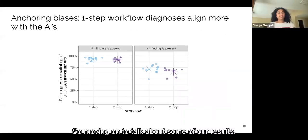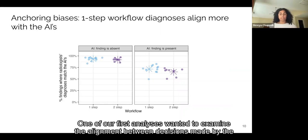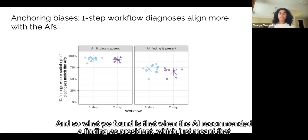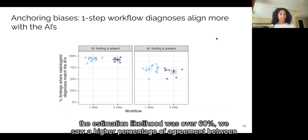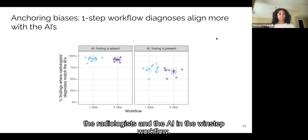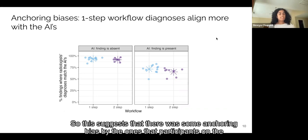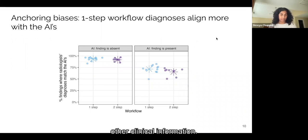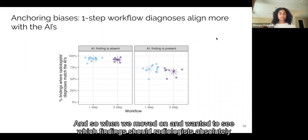Yeah, so moving on to talk about some of our results. One of our first analyses wanted to examine the alignment between decisions made by the radiologist and decisions offered by the AI. And so what we found is that when the AI recommended a finding as present, which just meant that the estimation likelihood was over 60%, we saw a higher percentage of agreement between the radiologists and the AI in the one-step workflow. So this suggests that there was some anchoring bias by the one-step participants on the AI information that was being presented to them at the same time as the x-ray and the other clinical information.